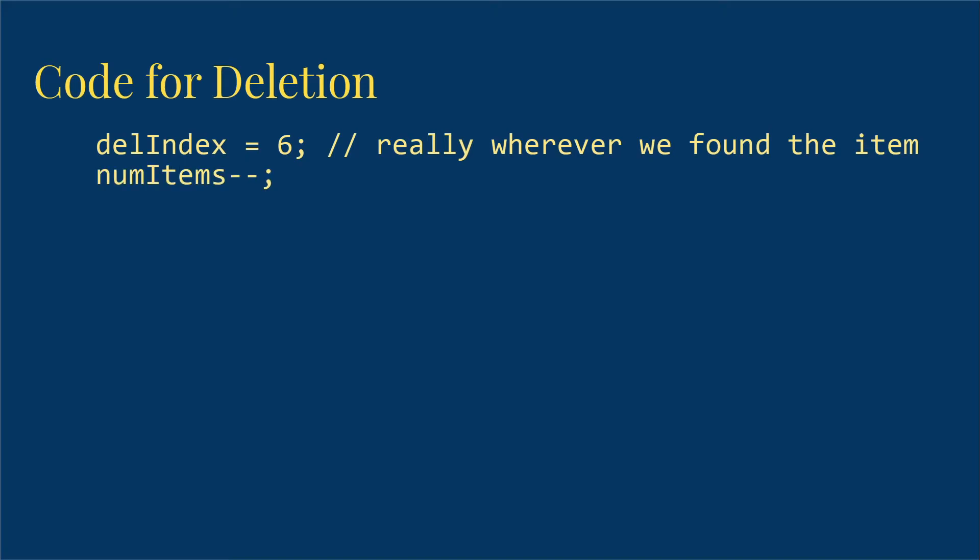We're then going to start by reducing the number of items. Then we need a loop. This will be a for loop starting at del index and going through num items minus 1. Inside the loop, I need to copy the value at index i plus 1 into the array at index i. And that's all there is to it.